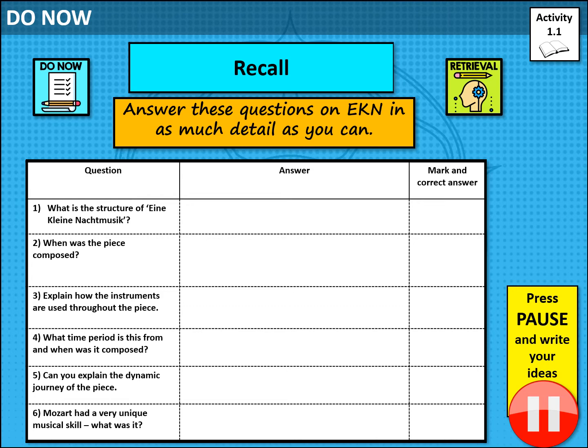OK, so just looking at the answers to these then. The structure of Eine Kleine — remember, it is in ternary form: A, B, A. But within that, there is also a substructure of each section being in binary form. So remember, that means A, B, A overall, and within each of those sections it is also A, B. Please make sure that you do understand that because it's really quite important.